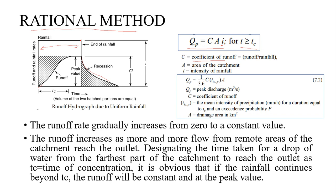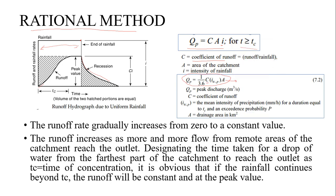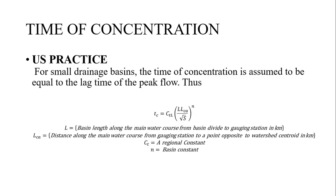This formula has been slightly modified so that area is in kilometer square, C is the same, but I is in millimeters per hour. Usually we use millimeters per day, but here it's per hour, so the factor 3.6 comes in the denominator. Otherwise it's the common formula QP = CIA. Now let's see the methods for calculating the time of concentration.